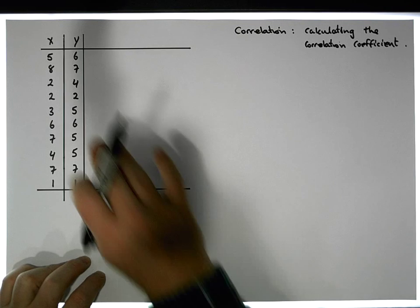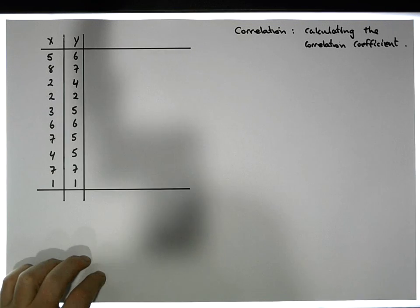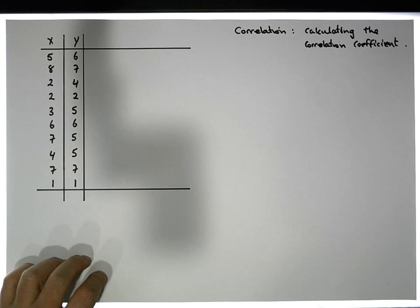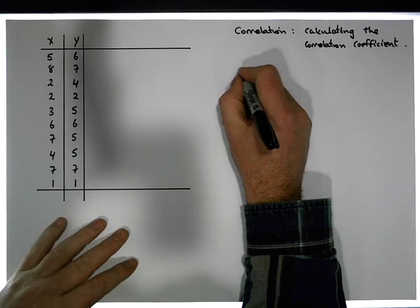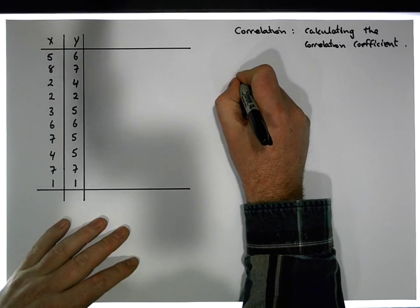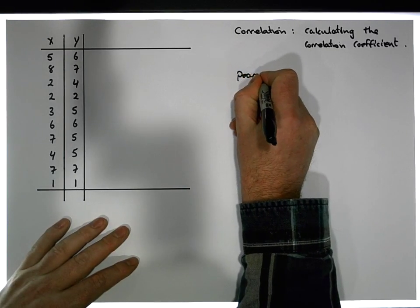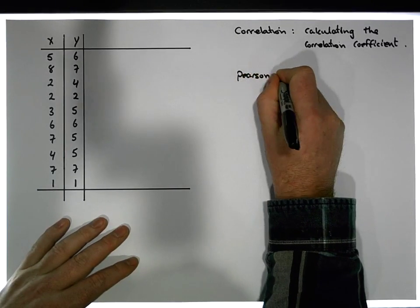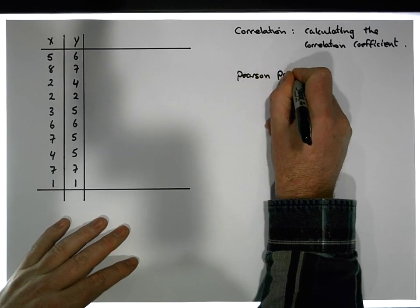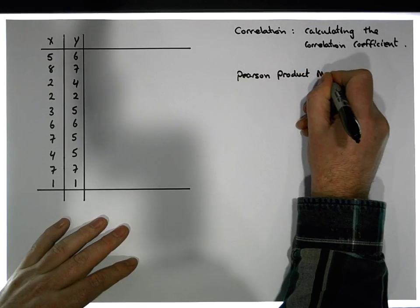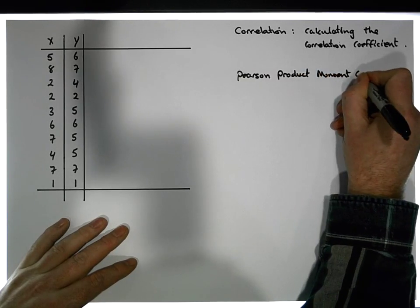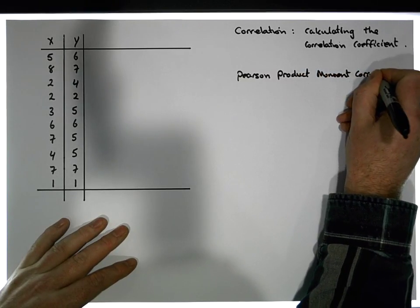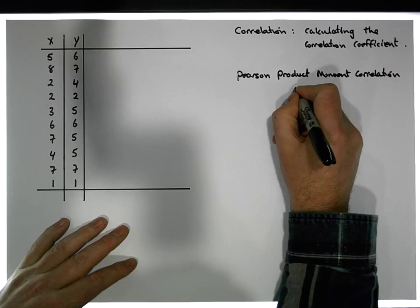In this case we have two continuous variables, so the correlation coefficient we are going to calculate is the Pearson product moment correlation coefficient.